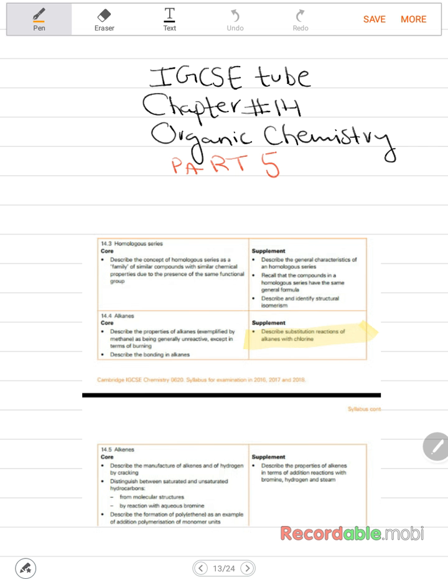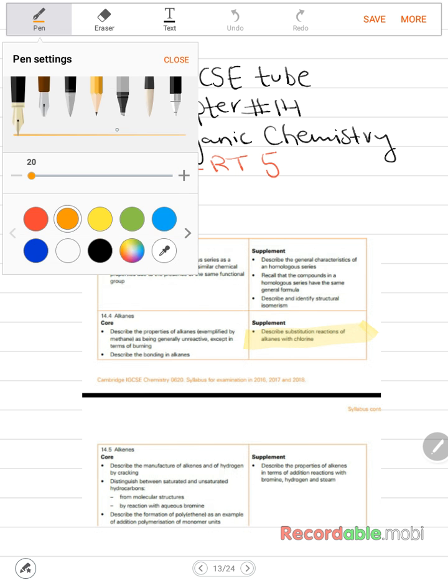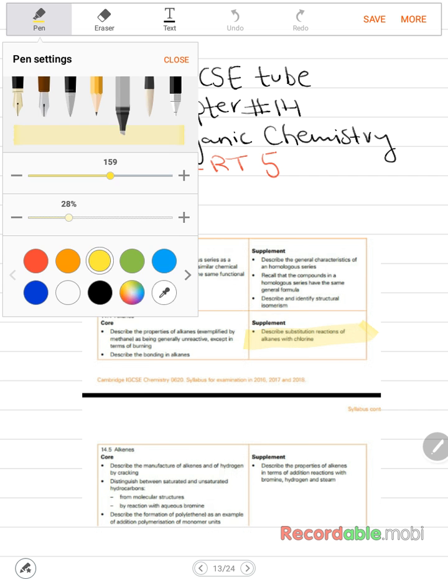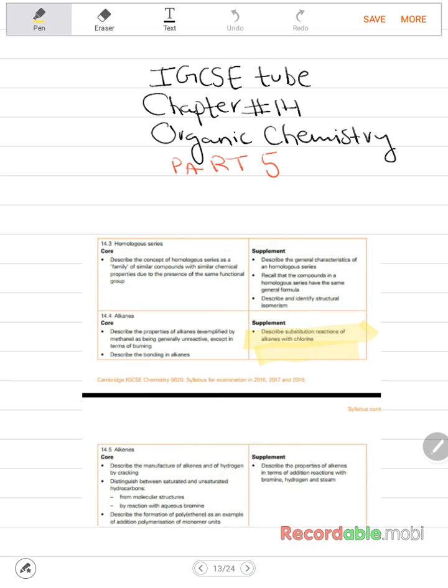In this video we will be talking about, let me get the highlighter, we will be talking about the substitution reaction of alkanes with halogens, not only chlorine but with halogens in general.